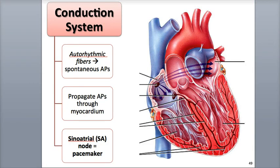There are two main functions of the auto-rhythmic fibers. They serve as the heart's pacemaker, establishing the rhythm of the heartbeat that contracts the heart. They also form the cardiac conduction system — an internal network of specialized interlinked auto-rhythmic fibers that propagates action potentials in a timed and organized way to coordinate the contraction of the heart's chambers and make the heart work efficiently as a pump.